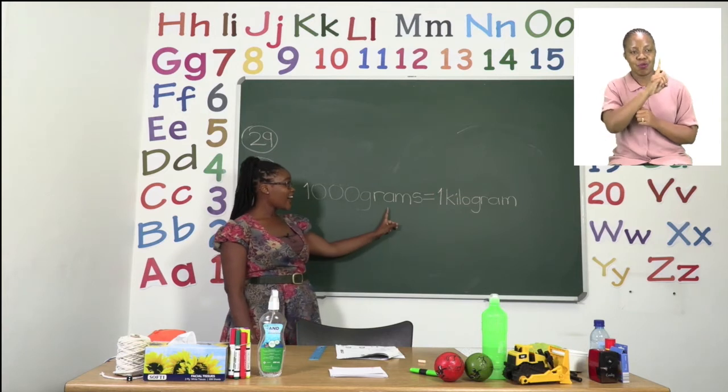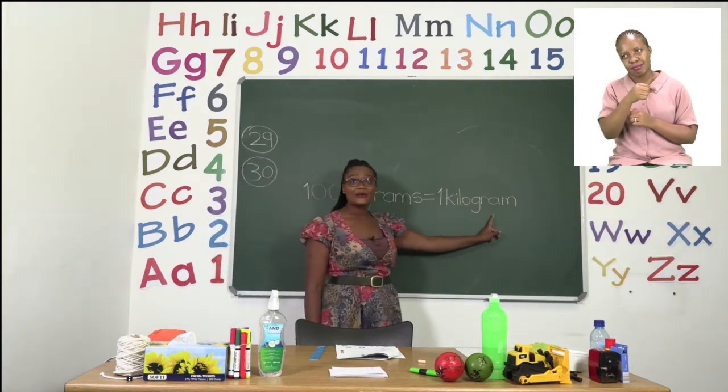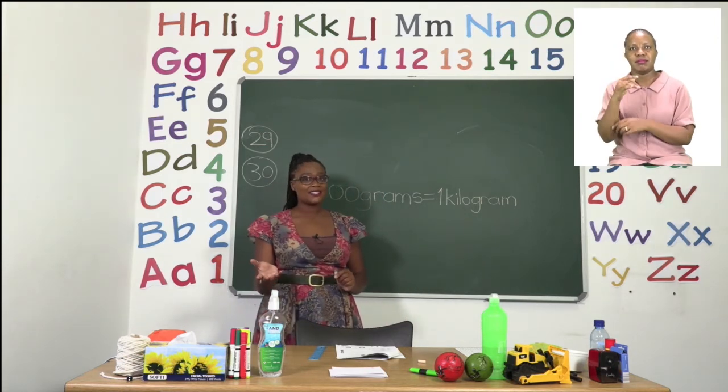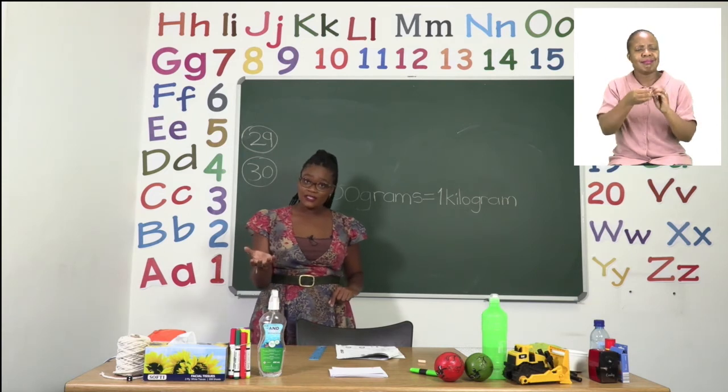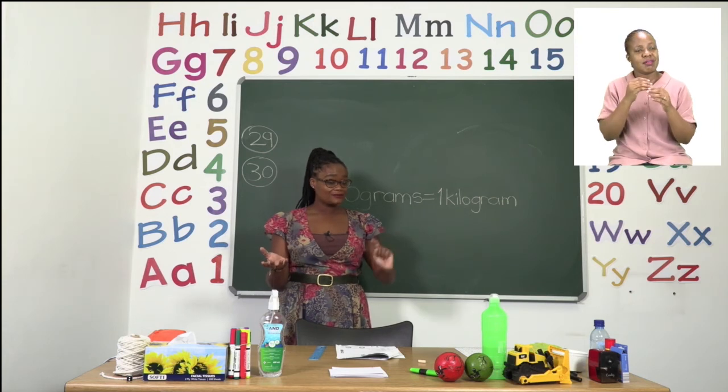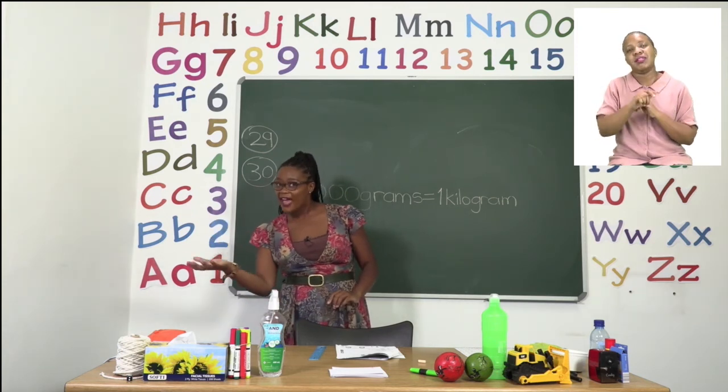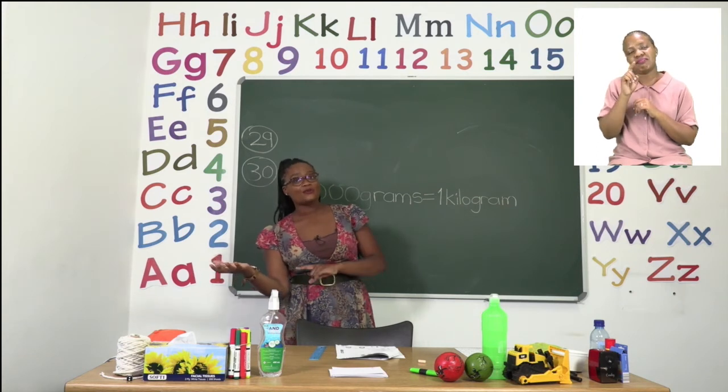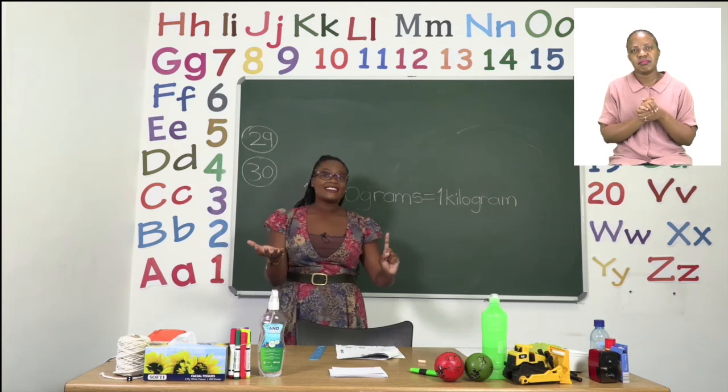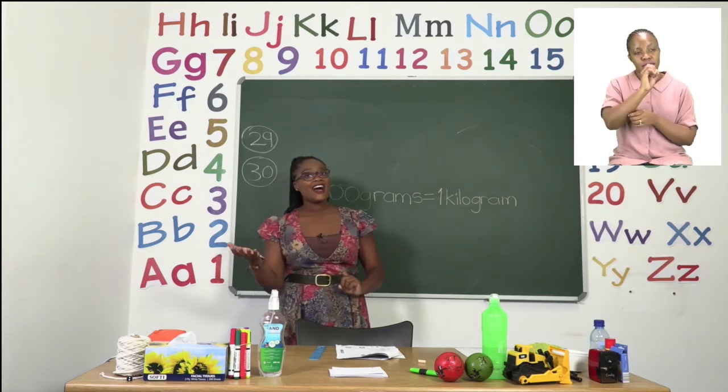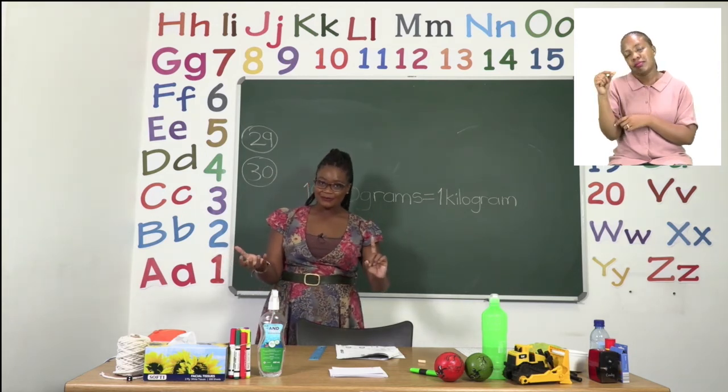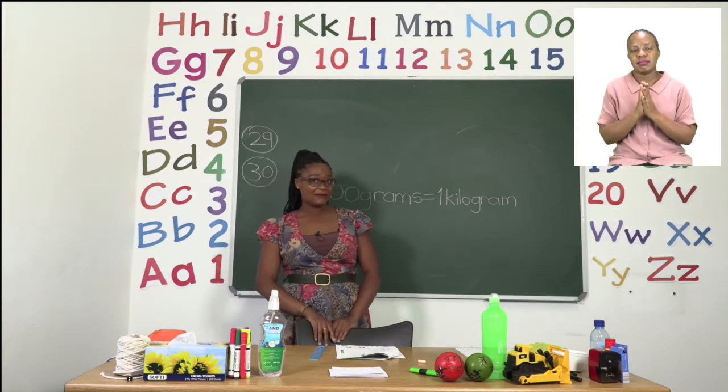A thousand grams equals one kilogram. So even if you have a lot of grams, if they don't get up to a thousand, then they don't reach up to one kilogram. So I would need a thousand grams in this hand so that they can reach the same level as one kilogram. That is what we mean when we say a thousand grams is equal to one kilogram. Now let us take a look at number 4.